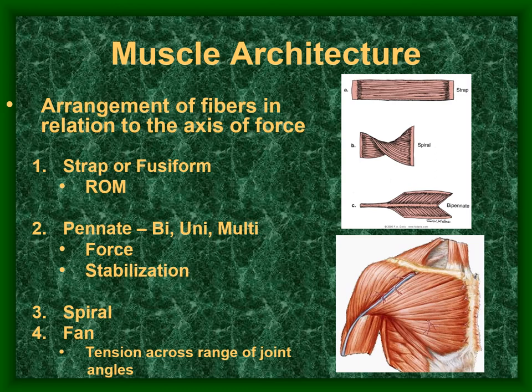Pennate muscles insert into a central tendon and can be unipennate, bipennate, or multipennate. They have many short fibers, making them best at generating high tension. The quadriceps and deltoid, for example, are multipennate. However, they cannot contract across a long range of motion.